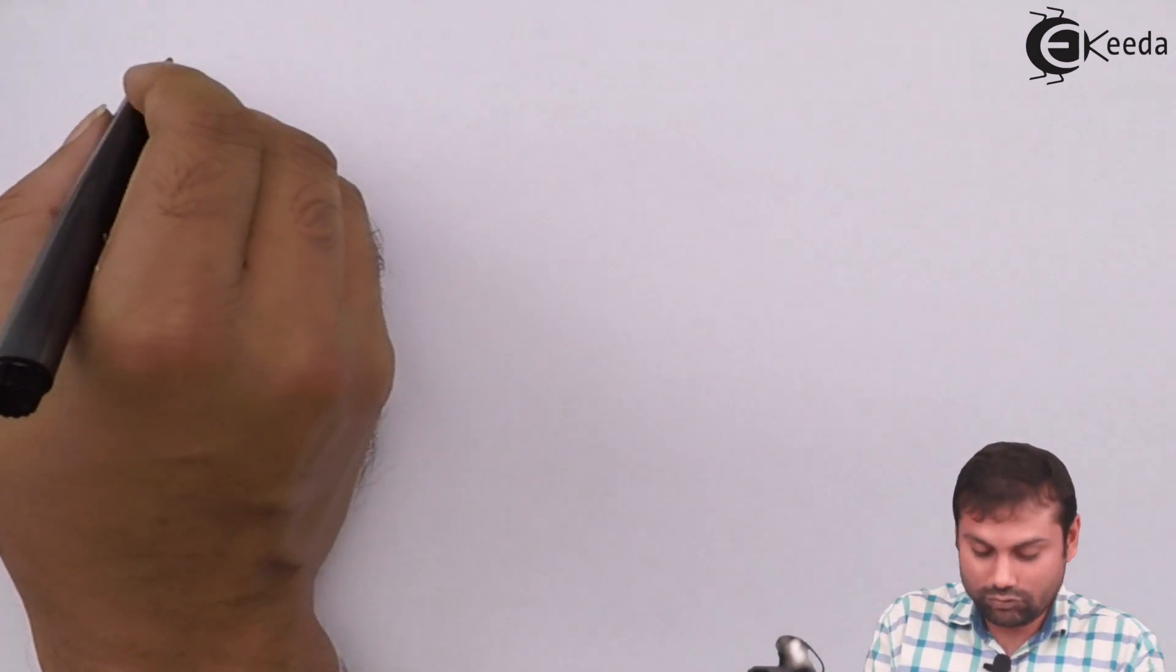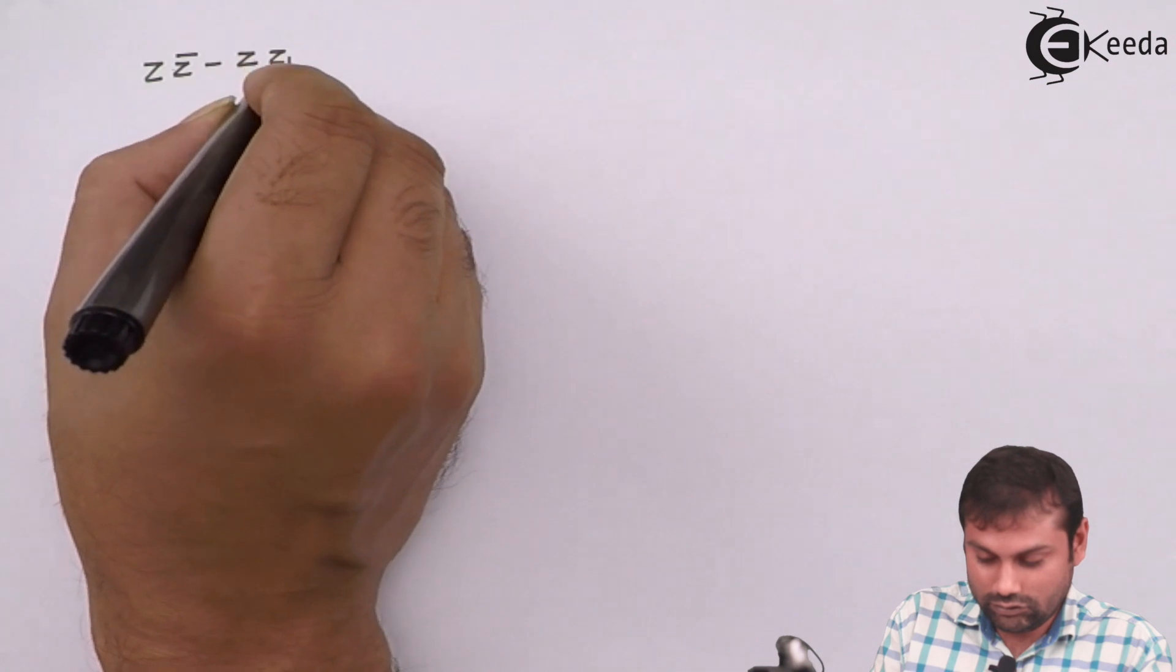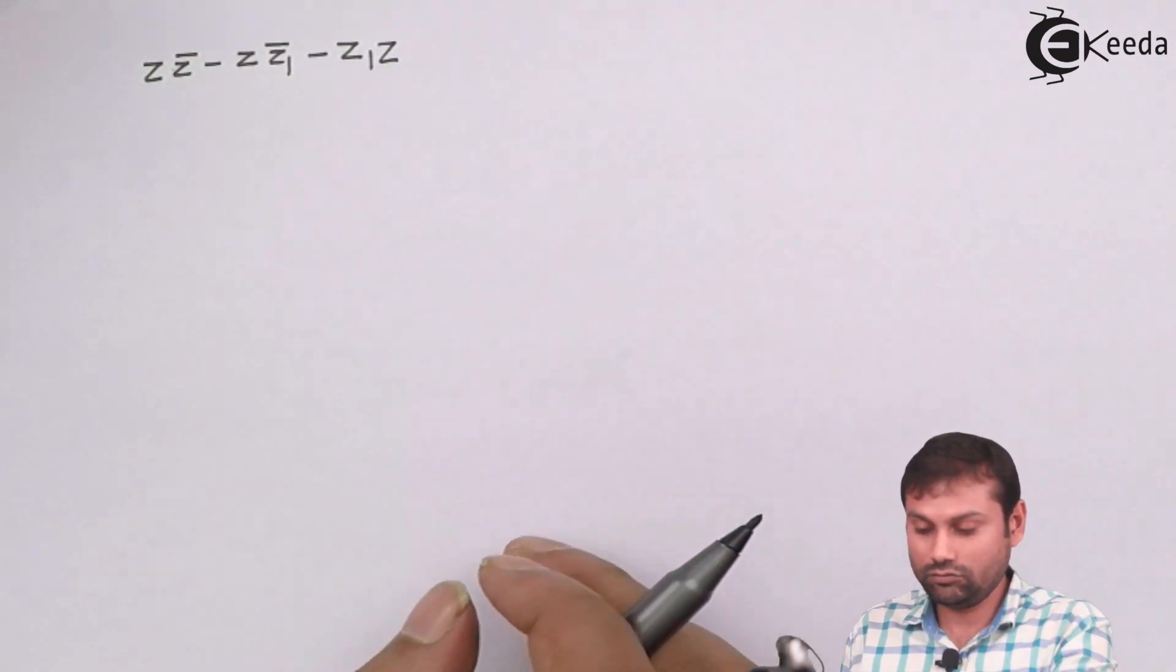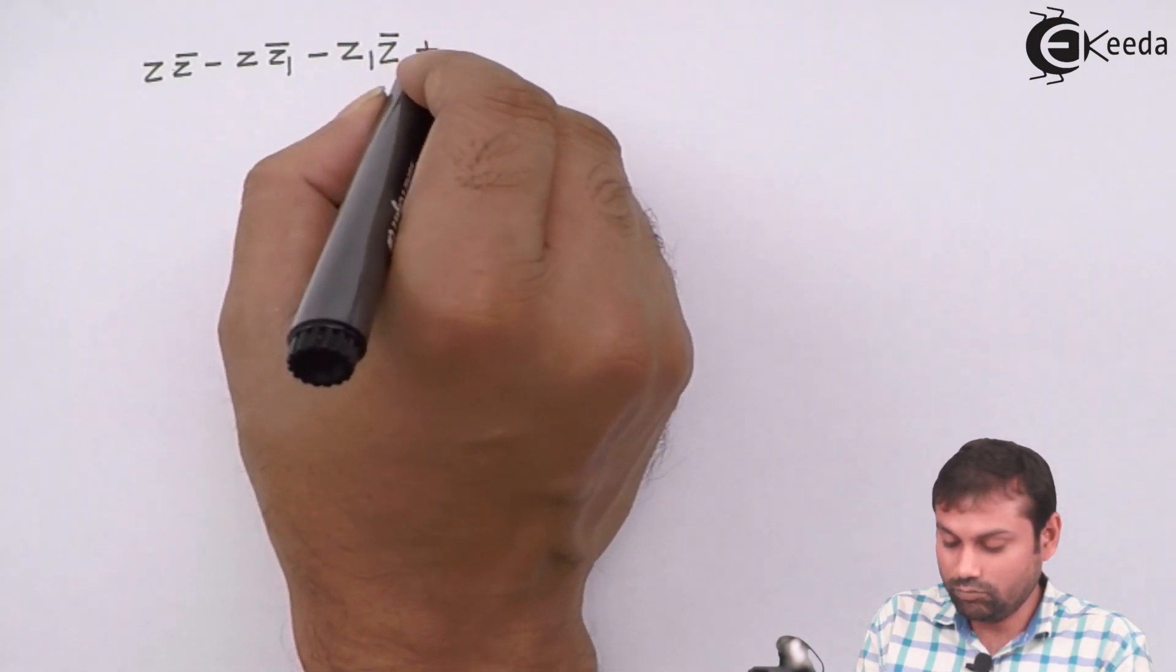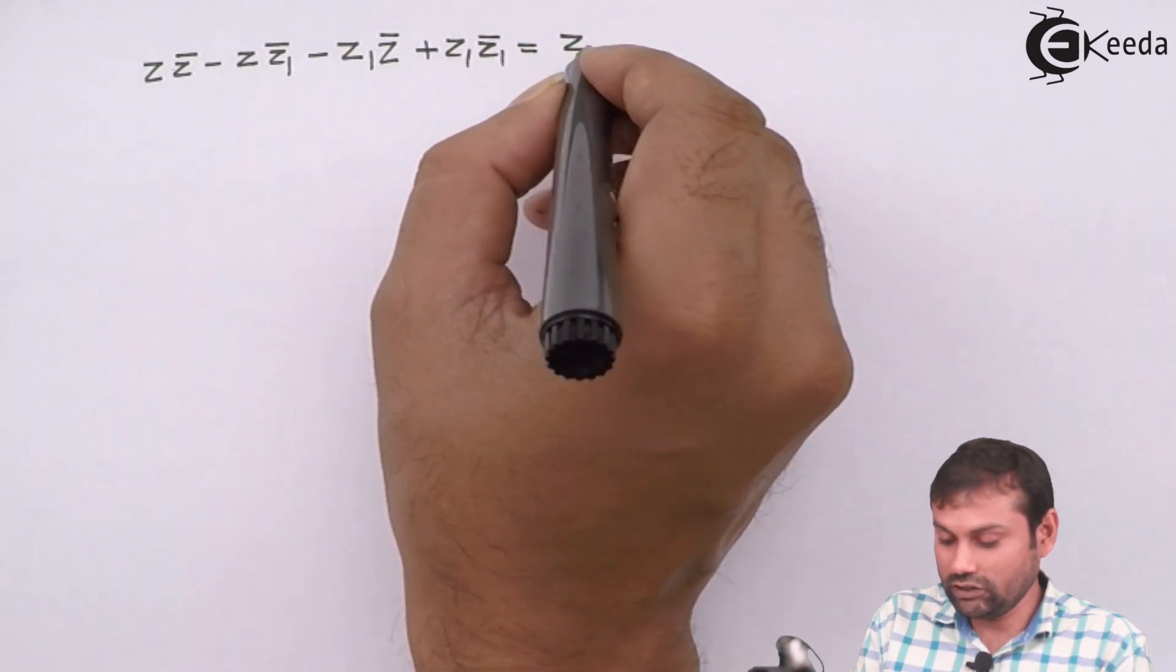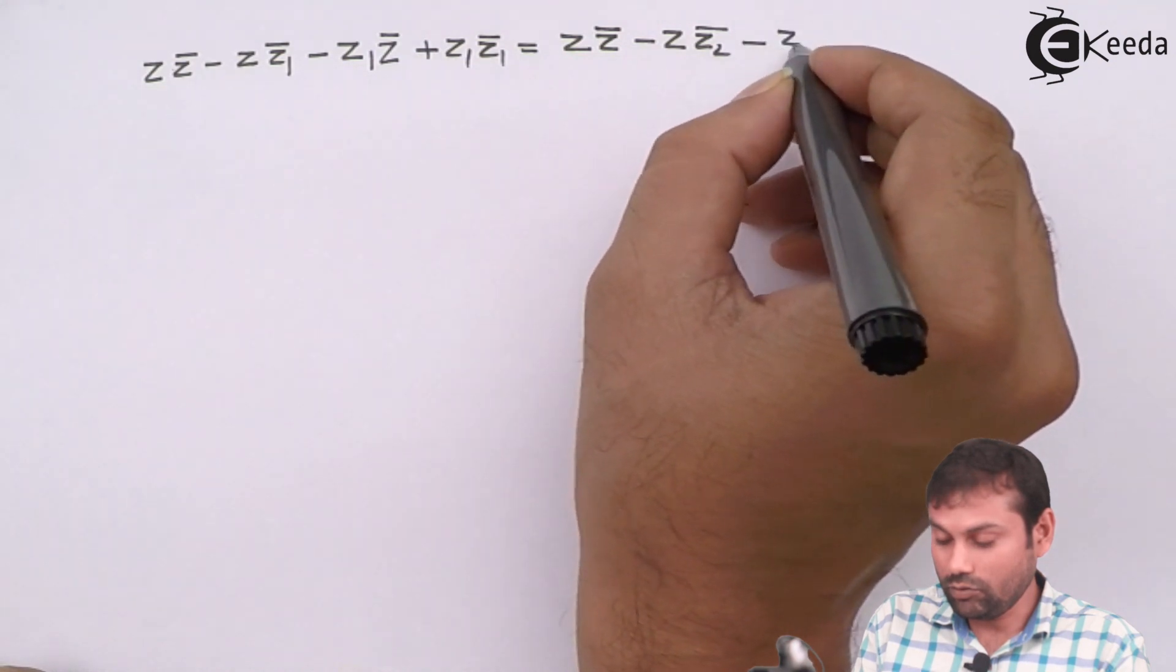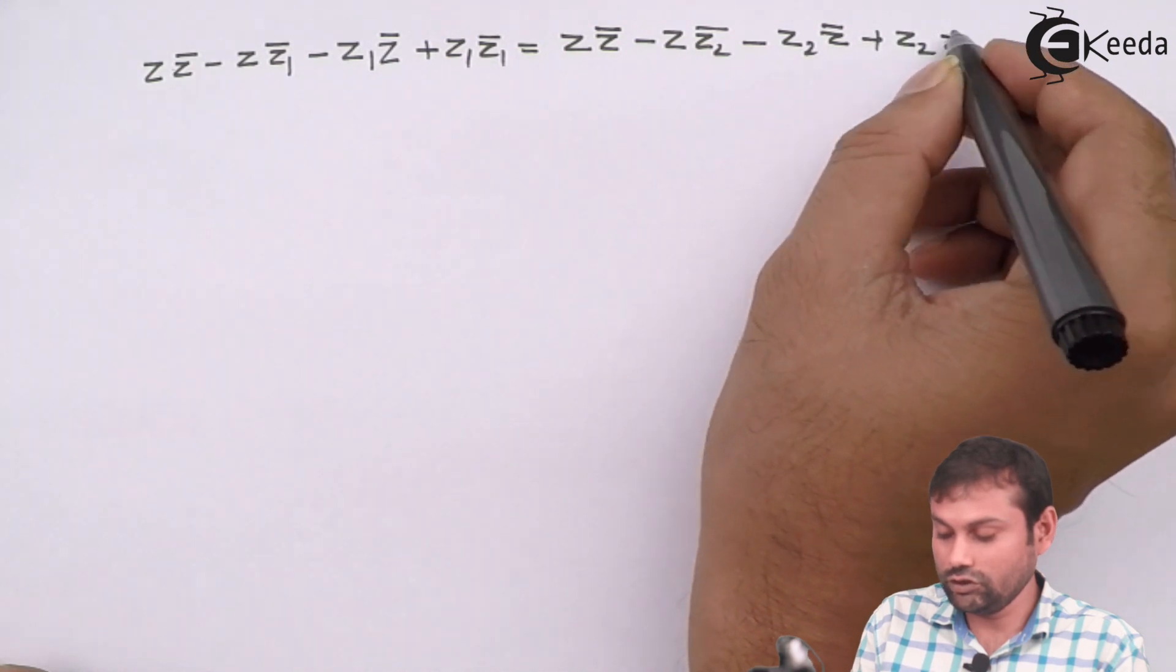Now this is going to be, first Z minus Z1, Z bar, Z minus Z1 plus Z1 Z1 bar. Similarly here Z minus Z2 and Z minus Z2 bar. So here Z Z bar minus Z Z1 bar minus Z1 Z bar plus Z1 Z1 bar equals to Z Z bar minus Z Z2 bar minus Z2 Z bar plus Z2 Z2 bar.